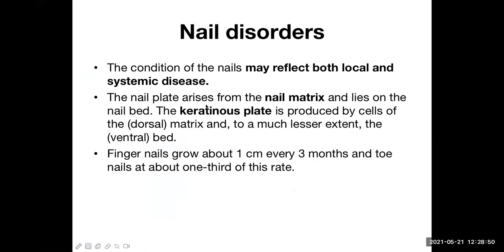The nail plate arises from the nail matrix and lies on the nail bed. The keratinous plate is produced by cells of the dorsal matrix and to a much lesser extent the ventral bed. Just like hair, the nail is also made up of keratin protein.